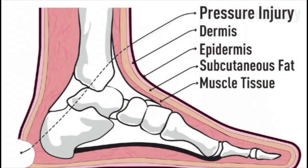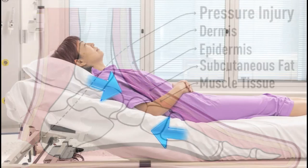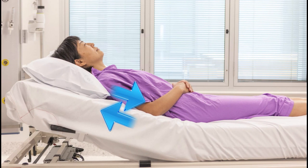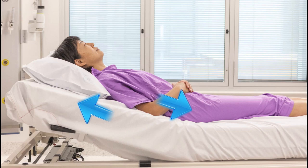Pressure injuries are caused by unrelieved pressure and/or shearing to the skin, which occurs from the force of the skin and underlying tissue moving in opposite directions, such as when you are slipping down in a bed or chair. Both pressure and shearing result in poor blood flow to the affected area, which can result in a pressure injury.